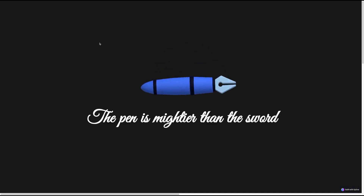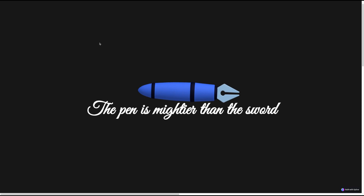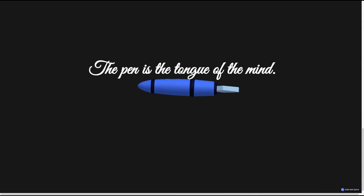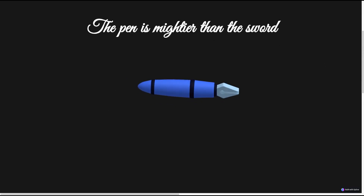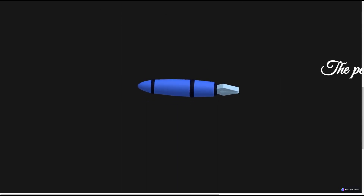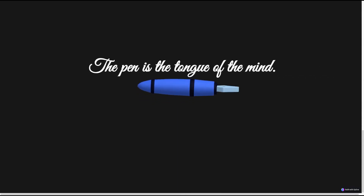Welcome to day 54 of my 100 days of Webflow journey. Today we're going to make a 3D object animate on scroll in Webflow. We'll create that animation and object in Spline, export it, display it in Webflow, trigger it with animation, and also animate some text around it.